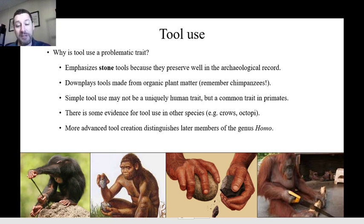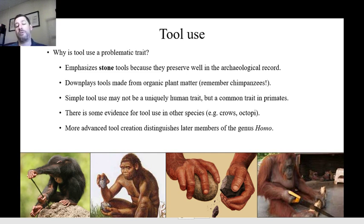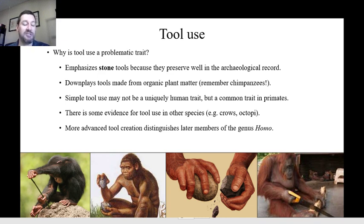So now we have to say that perhaps it's more advanced tool creation that distinguishes us — the ability to make very complex stone tools. But we're now seeing that chimpanzees also have the ability to modify sticks into different kinds of tools based on their purpose. So again, this isn't a perfect marker, and tool use is starting to fall out of favor for distinguishing humans as unique in their behaviors.